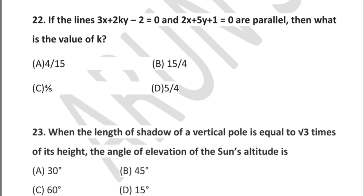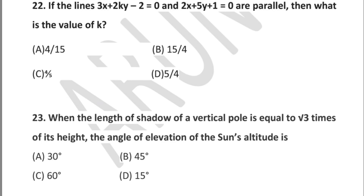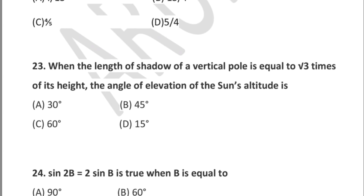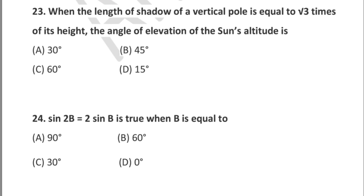Question 23: when the length of the shadow of a vertical pole is equal to √3 times its height, the angle of elevation of the sun is — option A: 30°, option B: 45°, option C: 60°, option D: 15°.